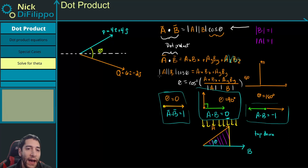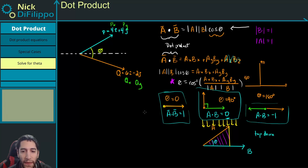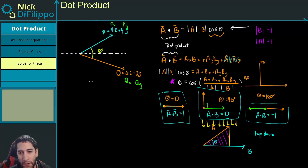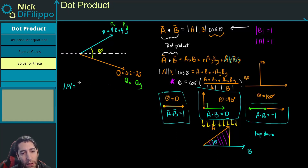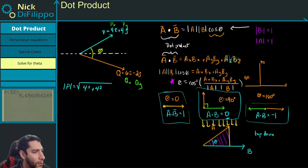Now looking at this example, I've already broken up the vectors into components: Px, Py, Qx, and Qy. I want to figure out the angle theta between them. Using our equation, theta equals the inverse cosine of (Px·Qx + Py·Qy) divided by the magnitudes. First, let's find the magnitude of P: it's the square root of 4 squared plus 4 squared, which is the square root of 32, giving us 5.66.